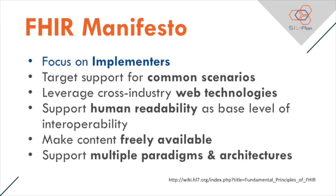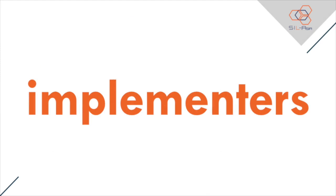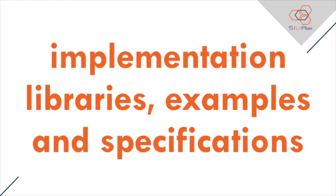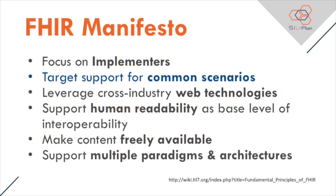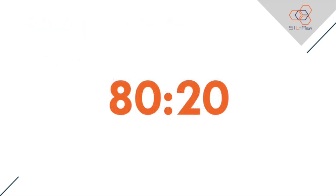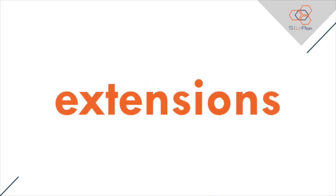FHIR uses this manifesto as a guide or rule in developing the FHIR standards. Focus on Implementers: the FHIR specification is written for one target audience — the implementers. They will be the ones to decide if it can be successful or adapted, because they will be the ones using it. It should be fast and easy to implement, with multiple implementation libraries and examples available plus extensive and well-written specification. Target support for common scenarios: heavy emphasis on the 80-20 rule — cover only the 80% of the use cases and allow the remaining 20% for extensions, enabling and encouraging extensions for specialized use cases or for localization.